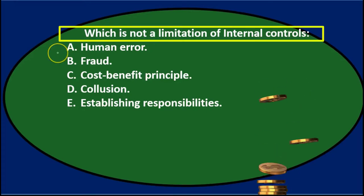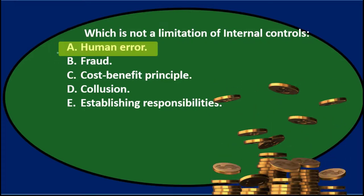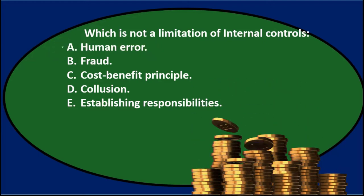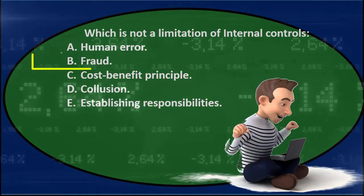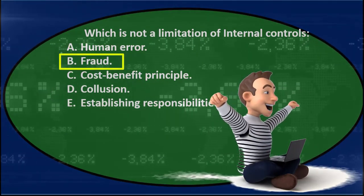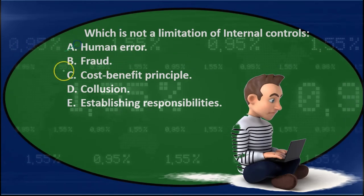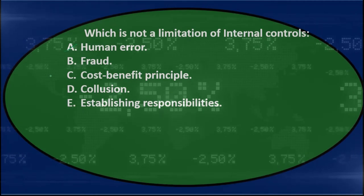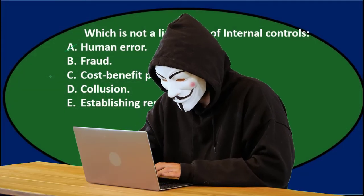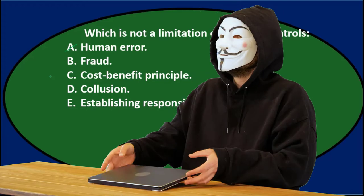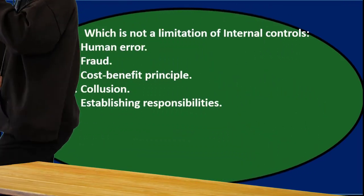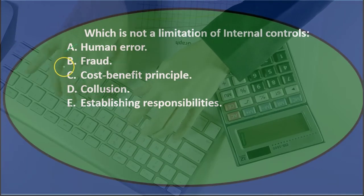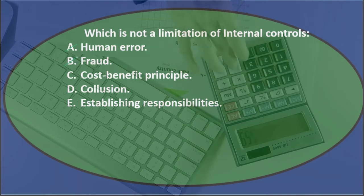Which is not a limitation on internal controls? Human error is still a limitation — we may reduce it with good internal controls, but it will still be a problem. Fraud can be reduced in likelihood, but if someone intends to commit fraud, it won't be eliminated. So fraud is still a limitation.